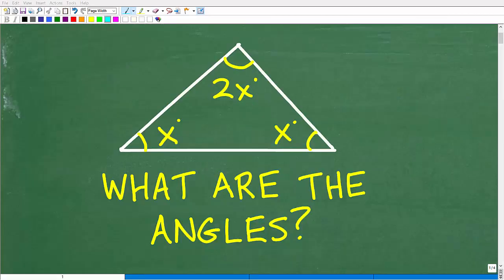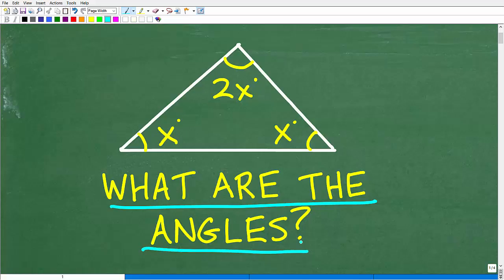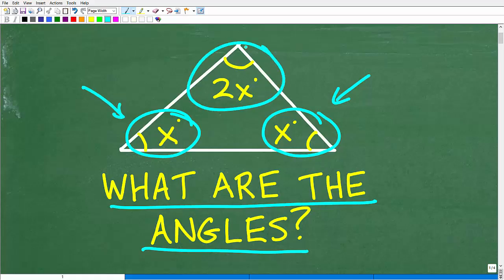And the question here is, what are the actual angles of this triangle? So let's take a look at this figure. So obviously we have a triangle, and this angle of the triangle is x degrees, and this angle over here is the same angle, it's x degrees, and this angle right here is 2x degrees. Again, the question is, what are the actual angles of this triangle?